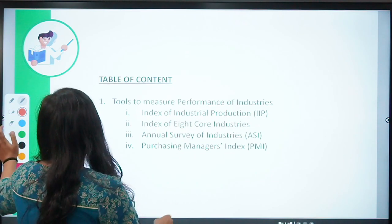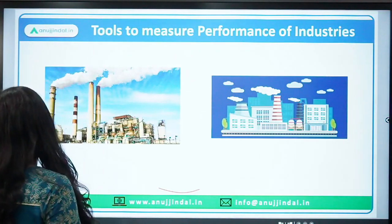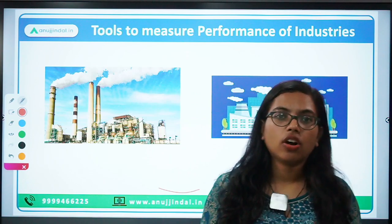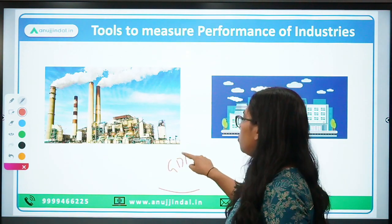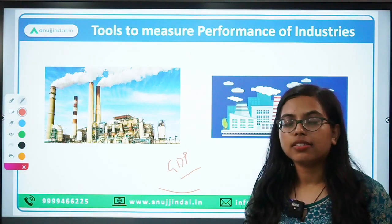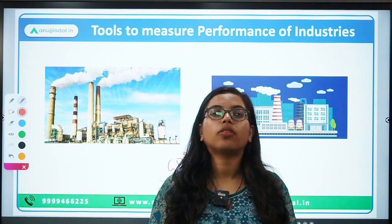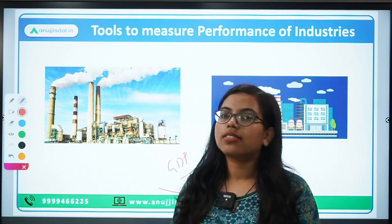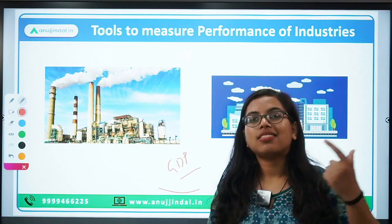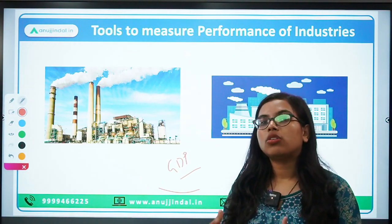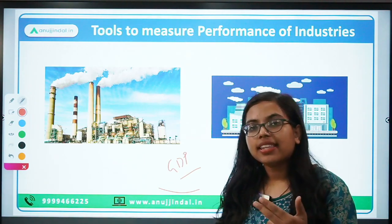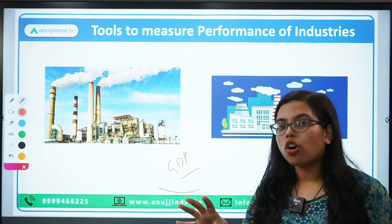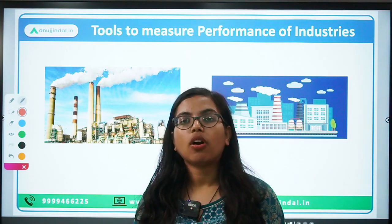Now let's first talk about industries. Industries is one of the major components of our economy. If you try to divide the GDP, it can be categorized into three major sectors. The first is the primary sector — agriculture and agricultural allied activities. The second is the industrial sector — manufacturing, which processes raw materials into goods. And finally, the tertiary sector — services. The industrial sector contributes around 20% to India's GDP.